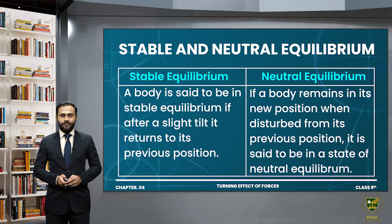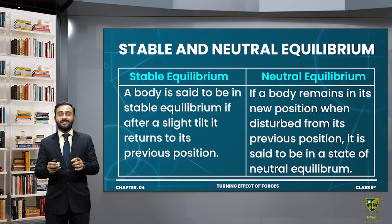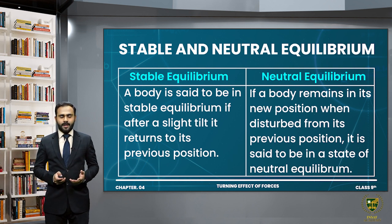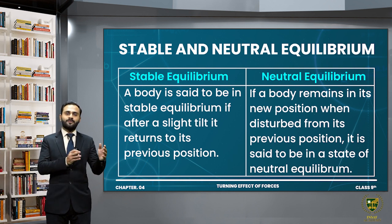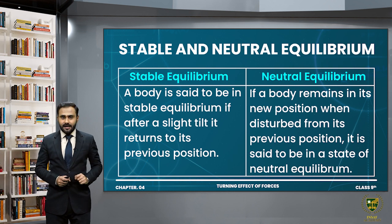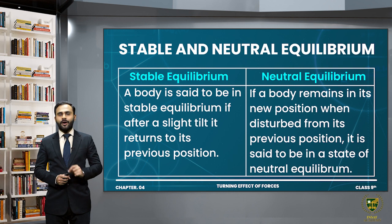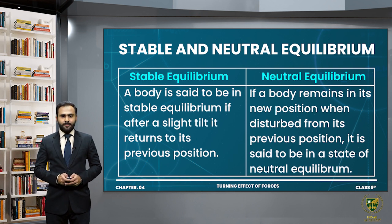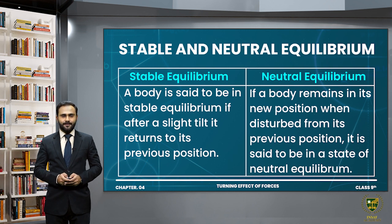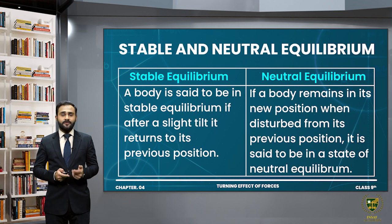Differentiating stable and neutral equilibrium: a body is said to be in stable equilibrium if, after a slight tilt, it returns to its previous position — the center of gravity rises when the body is tilted. In neutral equilibrium, if a body remains in its new position when disturbed from its previous position, and in this case the center of gravity remains at the same height.